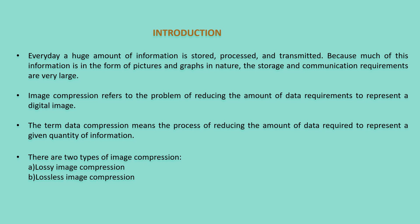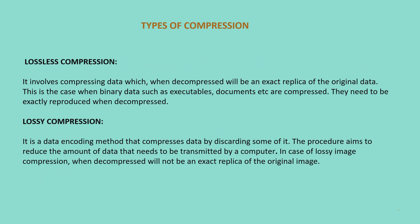There are two types of image compression: lossy image compression and lossless image compression. Various amounts of data can be used to represent the same information. Data might contain elements that provide no relevant information, called data redundancy. As said earlier, there are two types of compression: lossless compression and lossy compression.